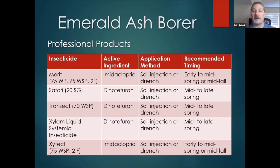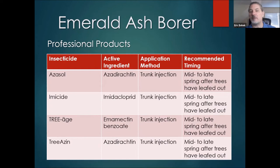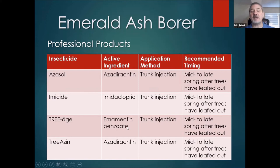The recommended timing varies with these products — generally springtime, but some like Zytect can be injected or drenched all the way into fall. We also have trunk injection products, primarily for the landscape market, with active ingredients including azadirachtin, which is related to neem oil; imidacloprid, which can be trunk injected; and emamectin benzoate — a very promising active ingredient in the product called TREE-äge. TREE-äge has been shown to provide upwards of two, possibly even three years of protection. The advantage is that it provides protection for two or maybe three years with just one trunk injection, whereas some others require injections every year. Applications are made mid to late spring after trees have leafed out.